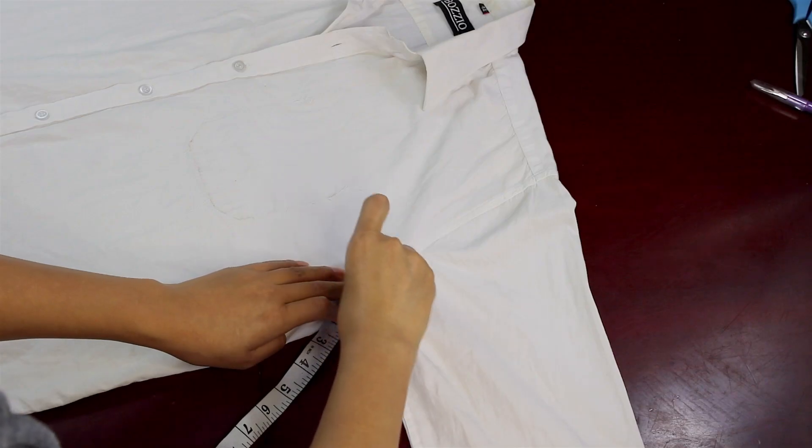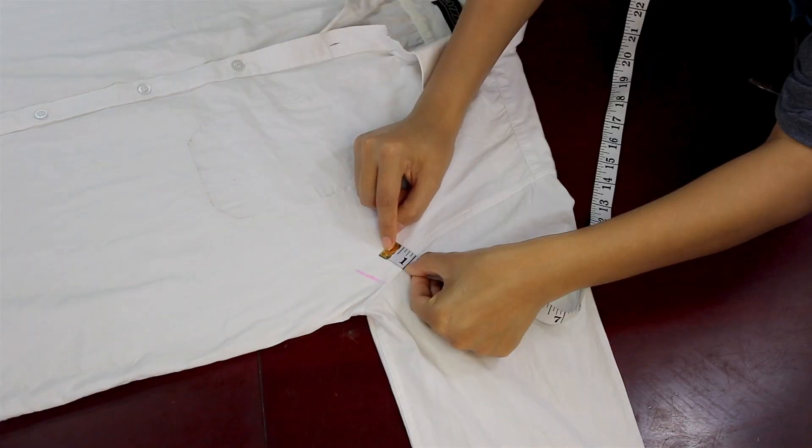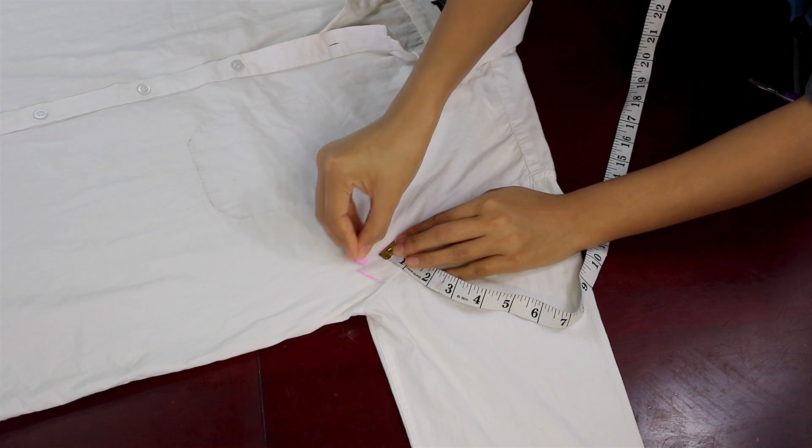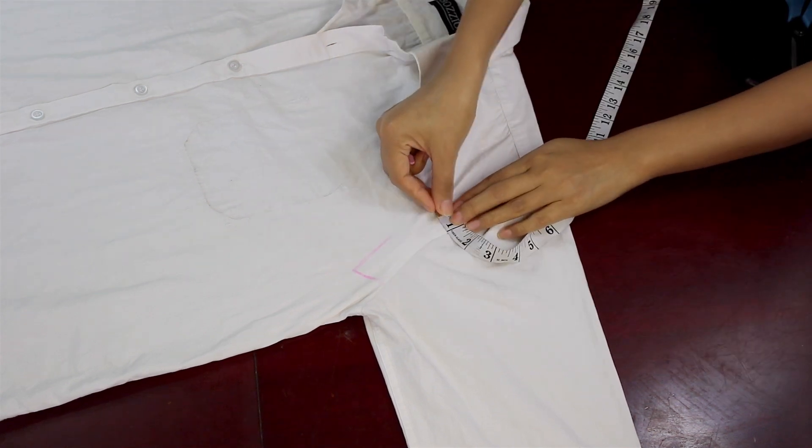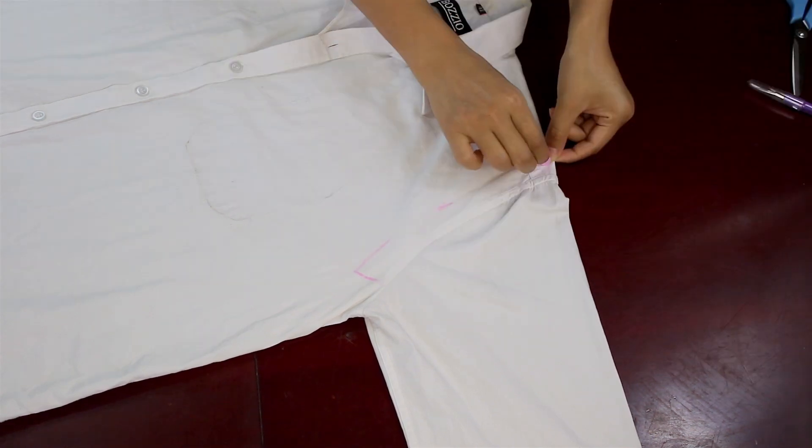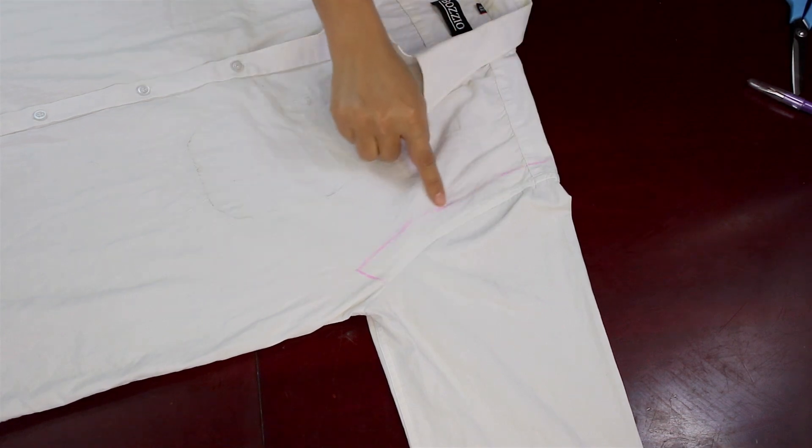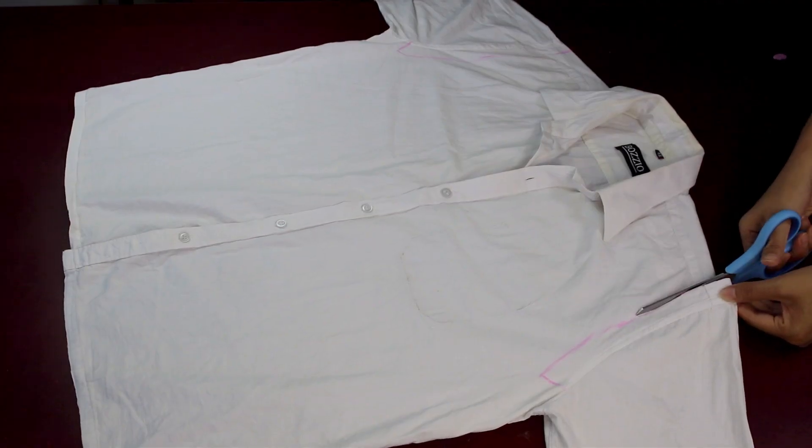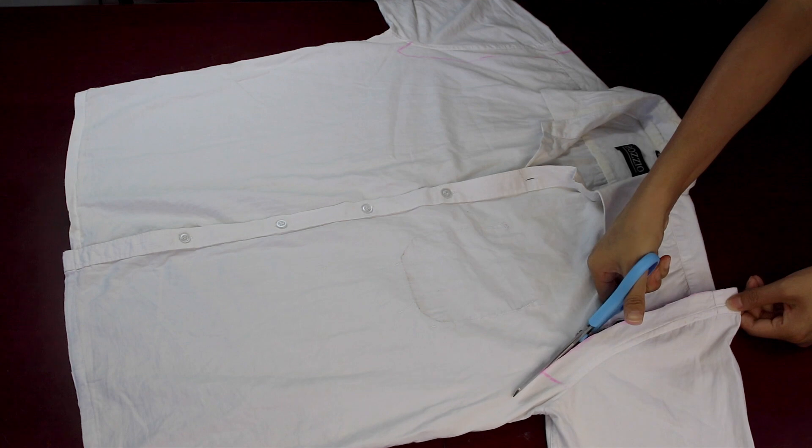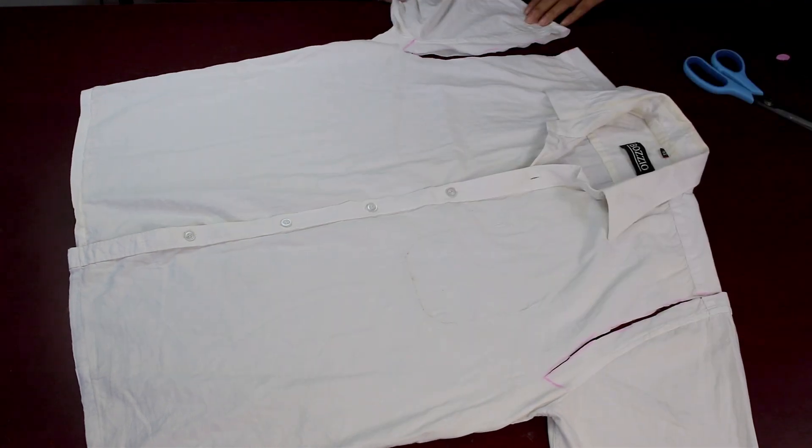And also one inch around the sleeve hole near the seam line, and I'm cutting it out. So basically I'm just cutting out the sleeve, keeping one and a half inches at the bottom.